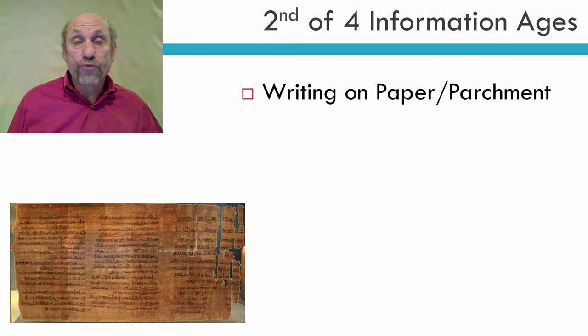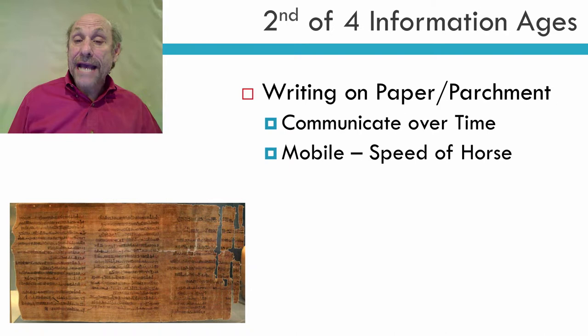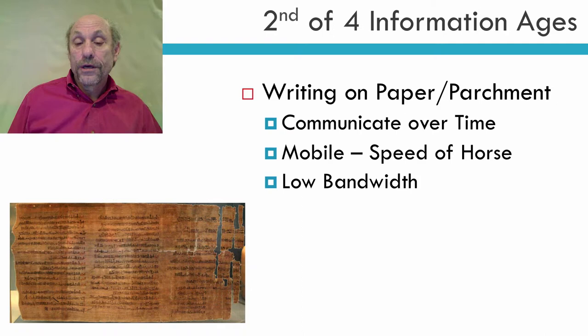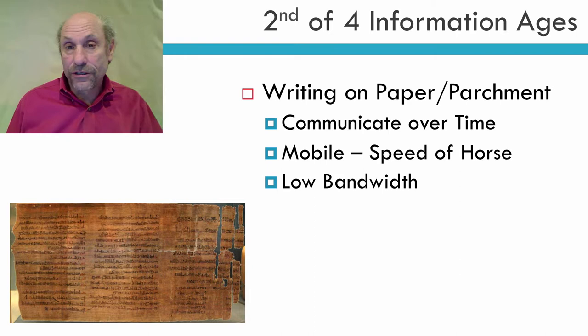The second information age is writing on paper or parchment. Again, you can communicate over time, and unlike cave paintings, now you have something that was mobile — information that was mobile, you can pass it around. It was still limited to the speed of a horse or a man, so it couldn't be very mobile. But if you wrote something and handed a letter to somebody, you could get it over a distance. It was still fairly low bandwidth, but obviously a lot more bandwidth than cave paintings, which is why writing became such an innovation.